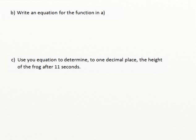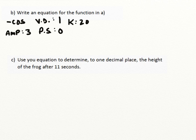Here's the next part of this question. It says, in part b, write an equation for the function in a, and in part c, use your equation to determine, to one decimal place, the height of the frog after 11 seconds. Let's remind ourselves of the characteristics of that graph that we saw. The characteristics were that we saw it was a negative cosine graph. It seemed to match that shape perfectly. It had an amplitude of 3, a vertical displacement of positive 1, a phase shift of 0, there was no phase shift, and a k value we calculated to be 20.